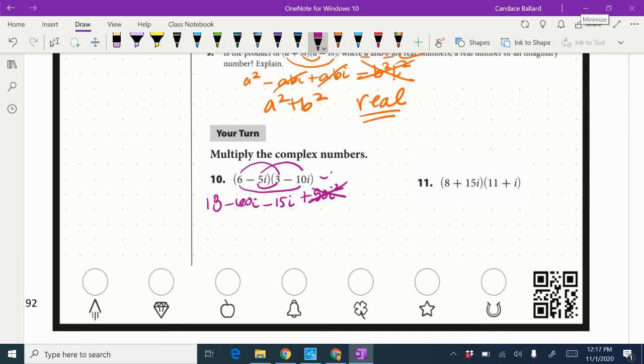We're going to combine like terms. So I have 18 minus 50 is going to be negative 32. And I have negative 60i and negative 15i is going to be negative 75i.